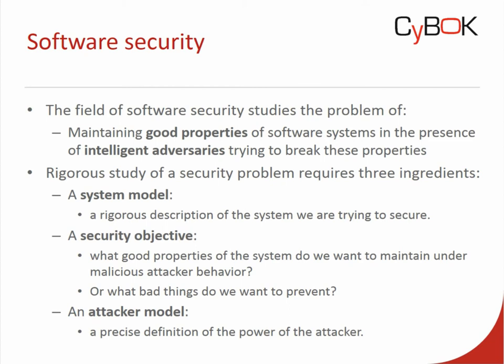A next ingredient is the security objective. The notion of security in itself is not very informative — what is a secure system? We have to define and specify that. In the security objective, you specify things like what are the good properties we want to maintain, or alternatively, what are the bad things we want to prevent, and what kinds of things should never happen to the system.